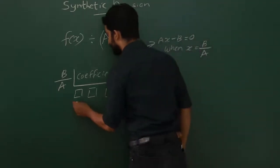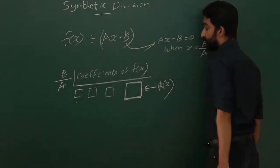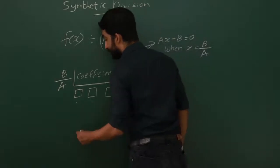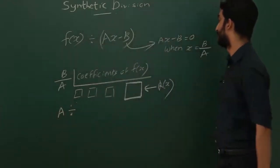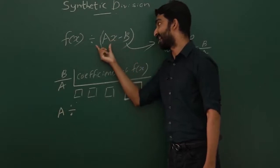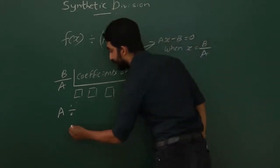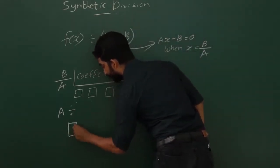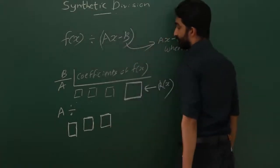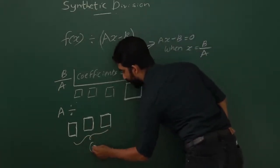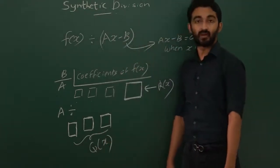The remaining digits — everything except the last — we divide by a, where a is the coefficient of x in the linear divisor. After dividing, you get a set of new values, and we call this the quotient. I guarantee you won't fully understand this until we do one example, so let's move on.